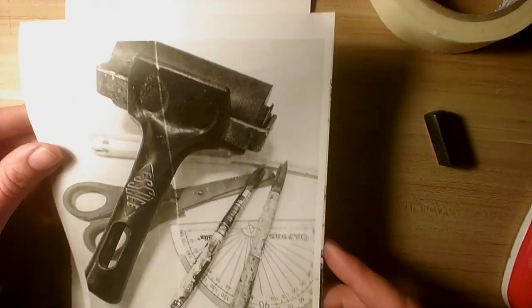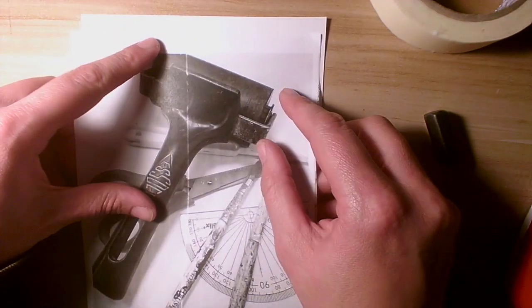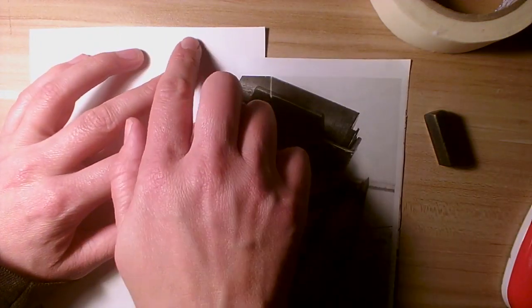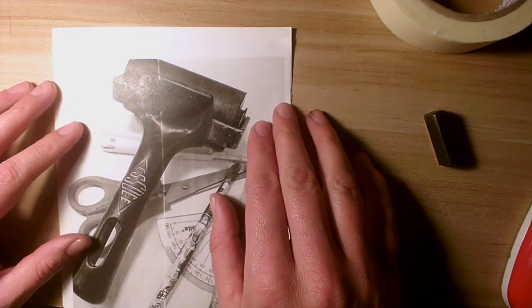Next thing you do, step two, turn it over, place it on top of your A5 cartridge paper. However, at the top here, leave a tiny space. So you've got your cartridge paper, then this a bit further down. Line it up.